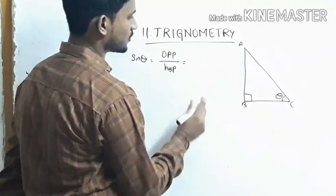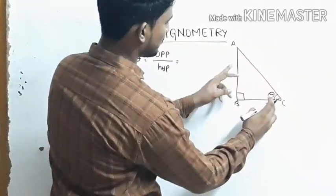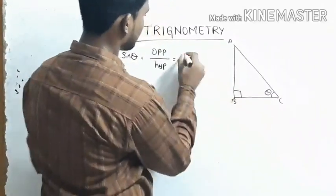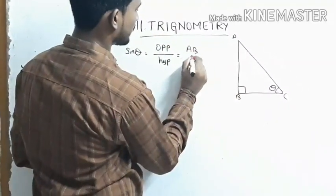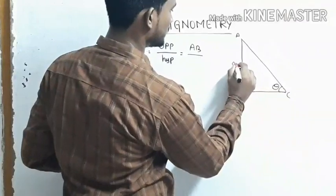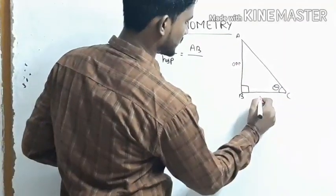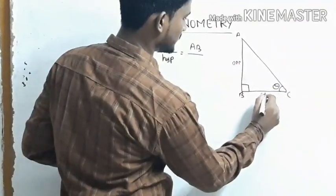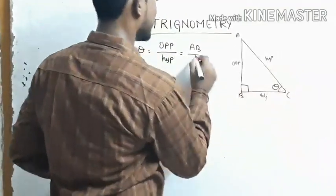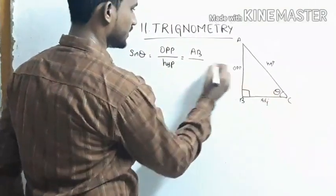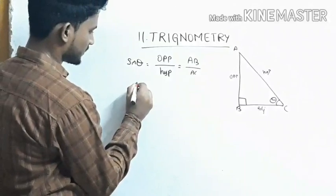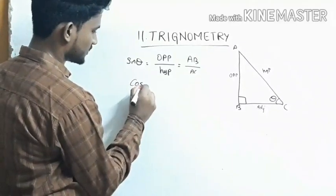Sin theta equals to opposite side AB by hypotenuse AC. The opposite side is AB, the adjacent side is BC, and the hypotenuse is AC. So sin theta equals AB by AC.